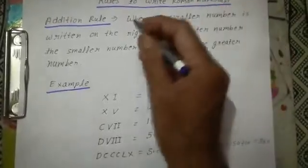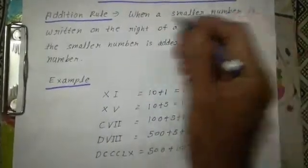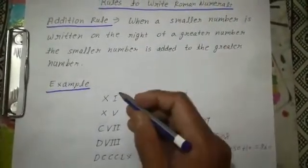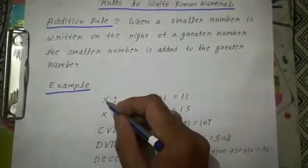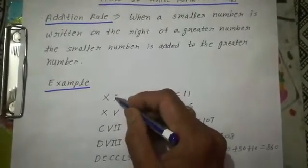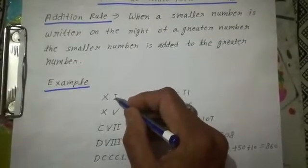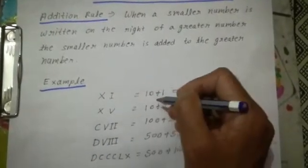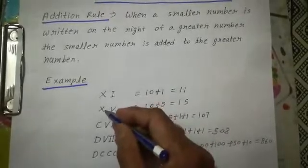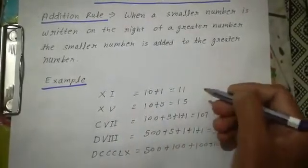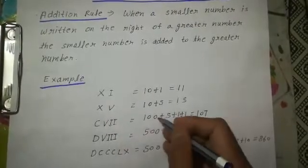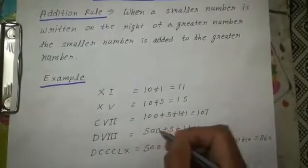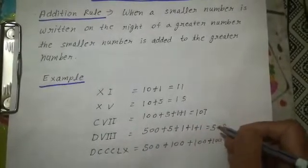Rules to write Roman numerals. Addition rule: when a smaller number is written on the right of a greater number, the smaller number is added to the greater number. For example, XI: value of X is 10, value of I is 1, so 10 plus 1 equals 11. XV: 10 plus 5 equals 15. CVIII: 100 plus 5 plus 1 plus 1 plus 1 equals 107. DVIII: 500 plus 5 plus 1 plus 1 plus 1 equals 508.